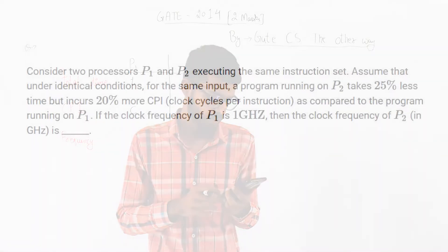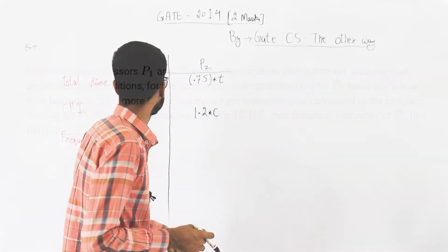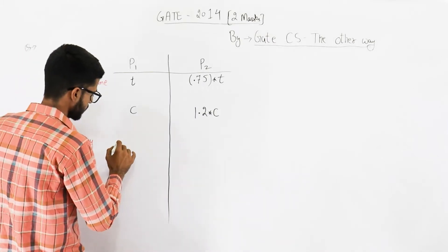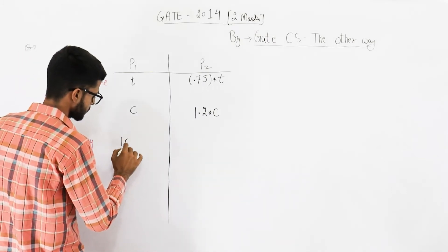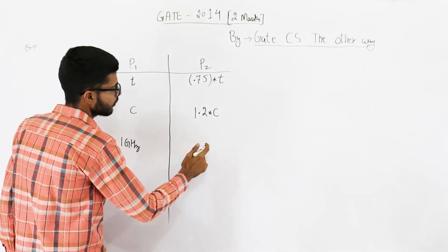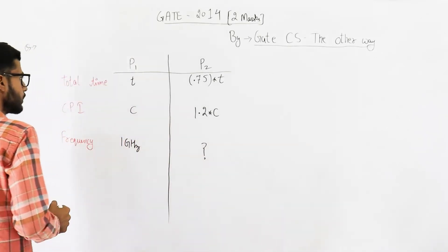As compared to the program running on P1. If the clock frequency of P1 is 1 gigahertz, then we need to find the clock frequency of P2 in gigahertz.